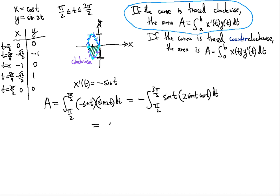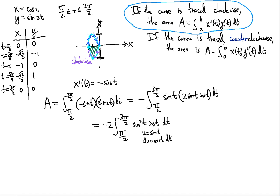Substituting, the integrand becomes sine t times 2 sine t cosine t, so we can factor out negative 2 and get negative 2 times the integral of sine squared t cosine t dt. We'll use u-substitution with u equal to sine t, since du equals cosine t dt — it's already there for us.